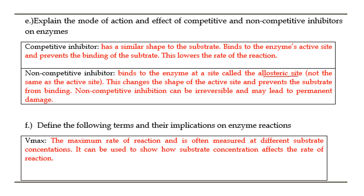Then I ask you to define the following terms and their implications on enzyme reactions. Vmax basically shows how substrate concentration affects the rate of the reaction — it is the maximum rate of reaction at different substrate concentrations. It tells you at what substrate concentration the enzyme performs optimally, because beyond a certain substrate concentration things flatten out and you won't have any further increase in the reaction rate.